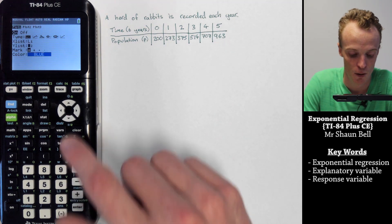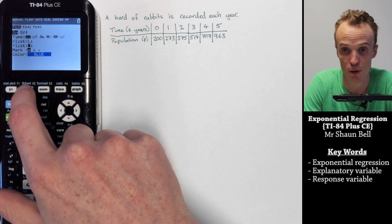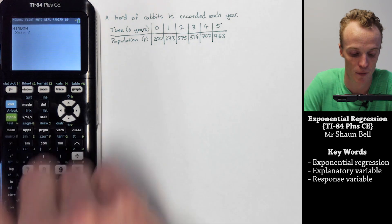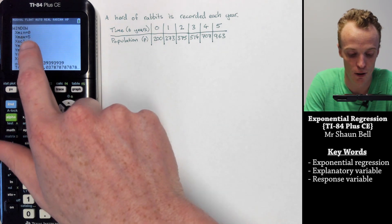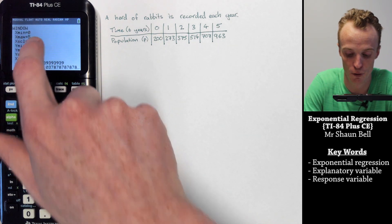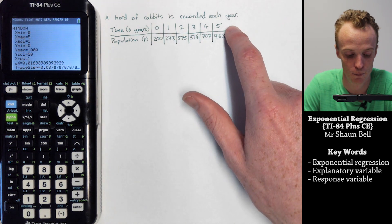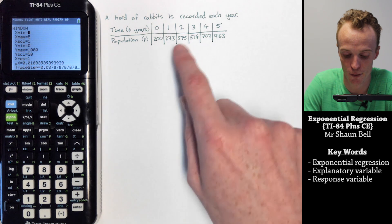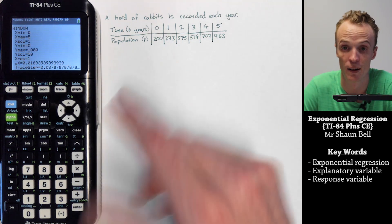Now we've done that, we need to change the view window which I've already done to best represent our values here. Our view window I've chosen to go from 0 through to 5 for our X's with a scale of 1, and then from 0 through to 1000 to cover all of our Y down here.